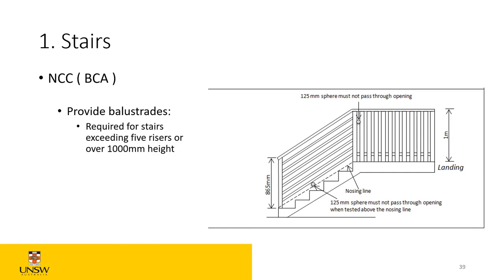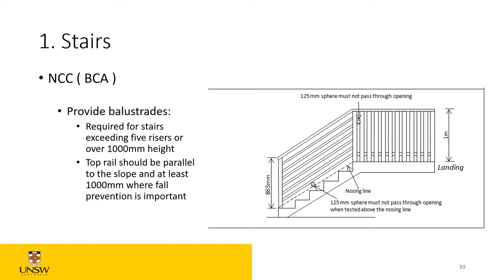Balustrades are required for stairs exceeding five rises or anything over one meter high from the floor — a handrail or balustrade is needed. The top rail should be parallel to the slope and at least one meter high where fall prevention is important. A minimum of 1.1 meters is typical. The 125mm sphere test also applies to balustrade openings. The line of the nosing should be parallel with the line of the balustrade.